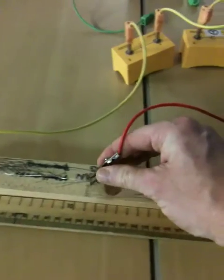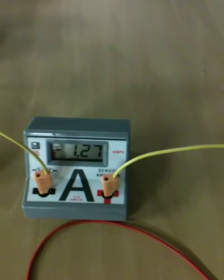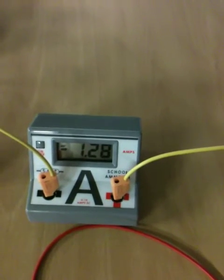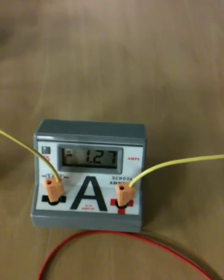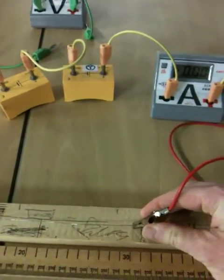We then take the crocodile clip and move it to 20 centimeters and again press our switch, take a reading, record it and again and I'll go up in 10 centimeters.